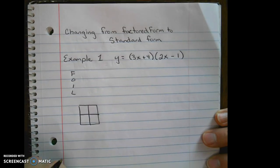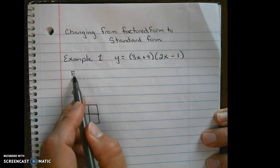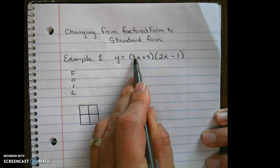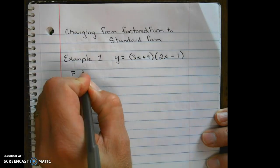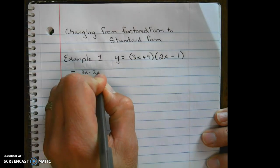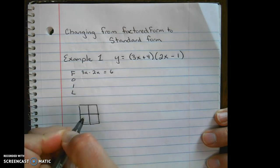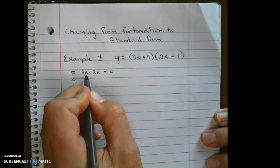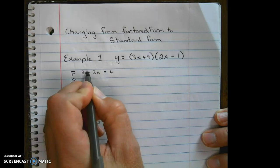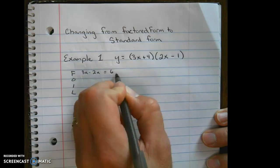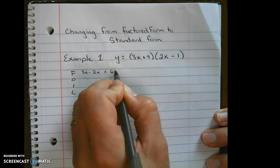I'm going to start with FOIL. F stands for first term, so we're going to multiply the first terms together. We're going to multiply 3x times 2x, so we multiply the coefficients, and remember when multiplying variables we add the exponents when the bases are the same. So 1 plus 1 is 2.